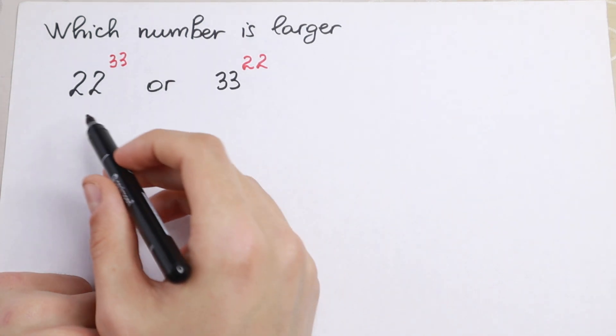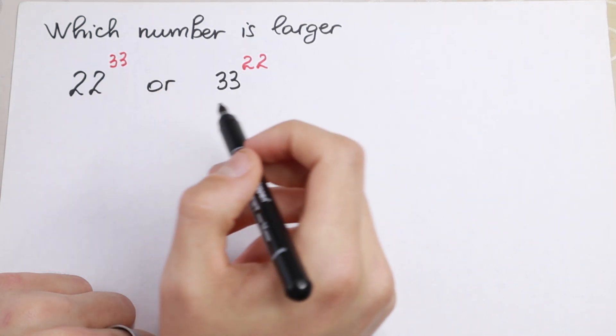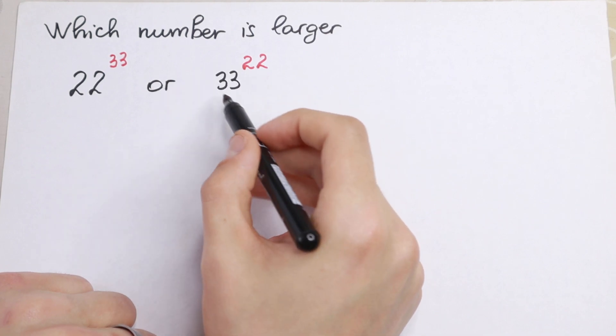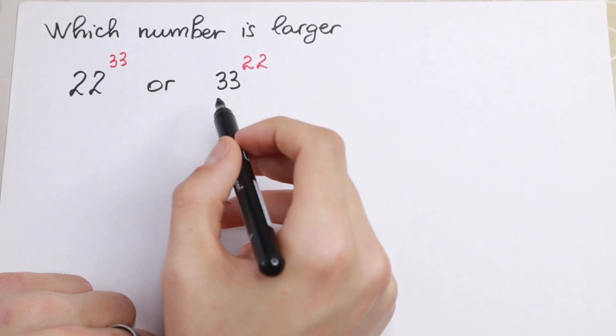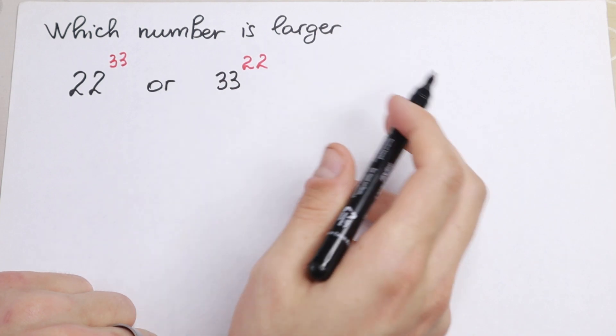So which number is larger? On the left hand side 22 to the 33rd power and on the right hand side 33 to the 22nd power. We need to compare these two numbers. How can we do this?